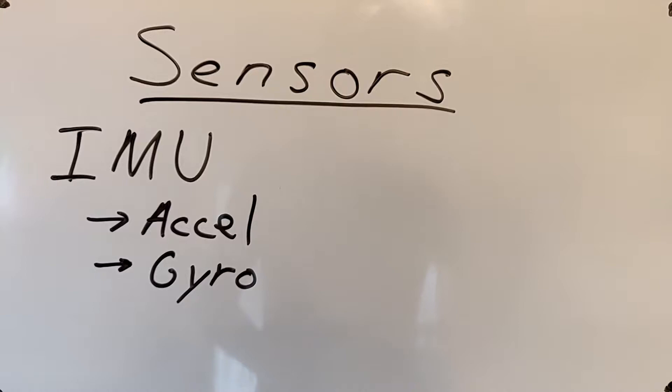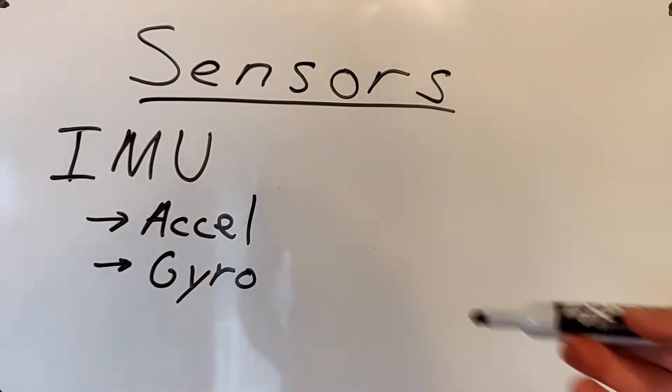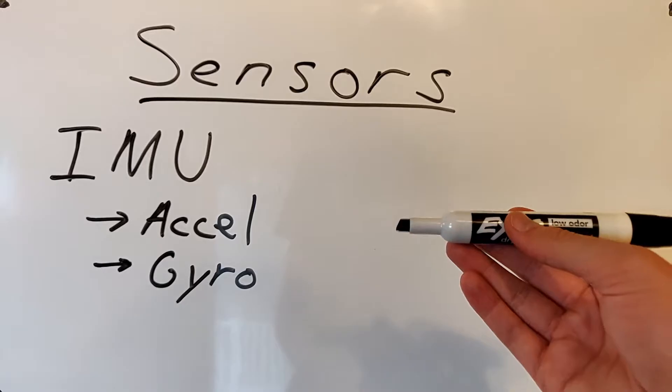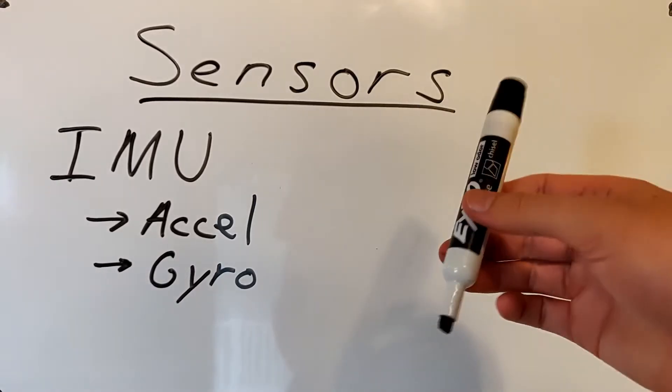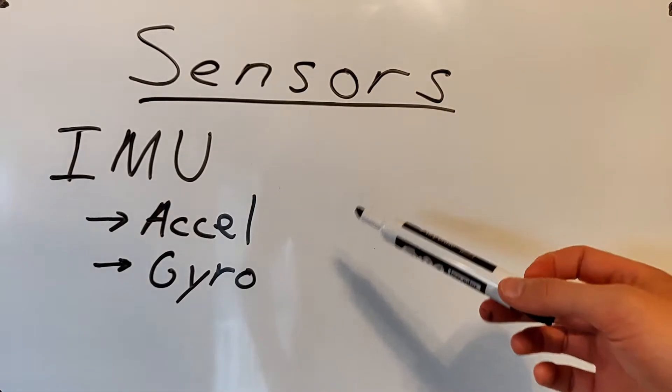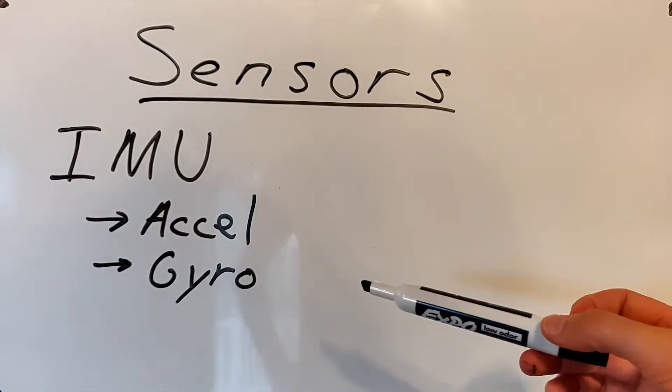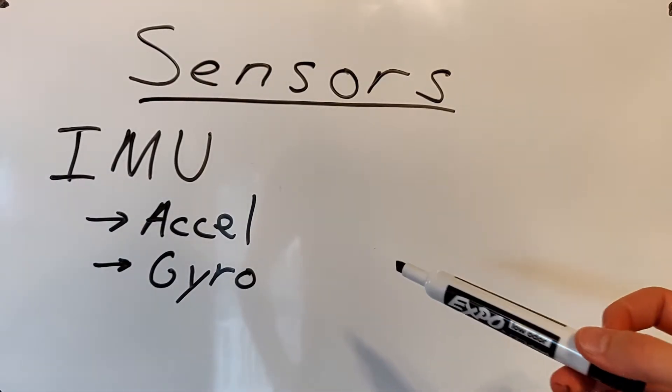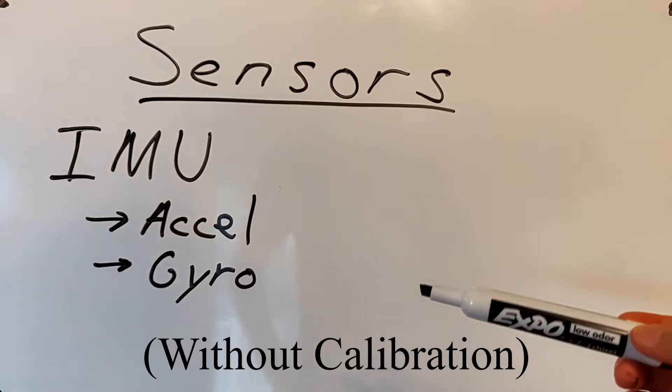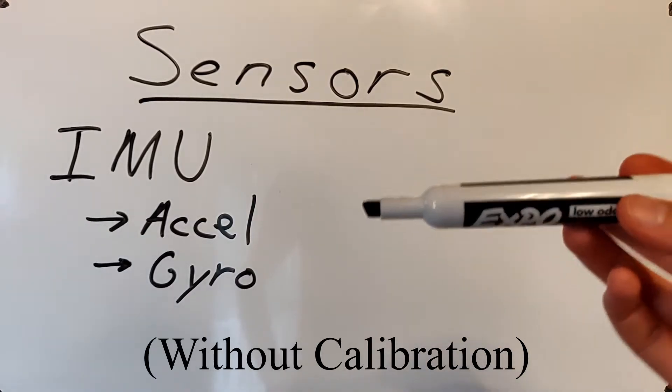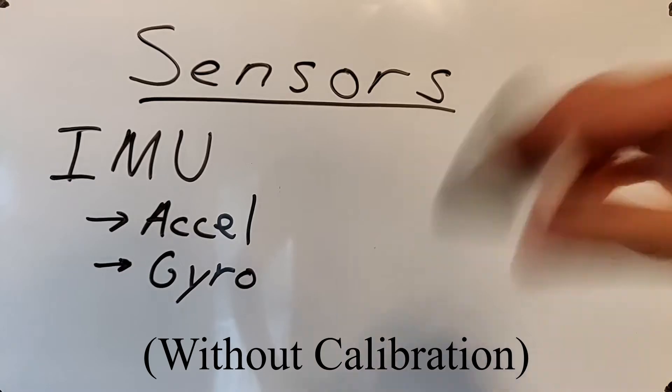The first sensor is the IMU or inertial measurement unit. This actually has two different sensors. One is the accelerometer which measures the force exerted on the quad, the linear force. The next is the gyroscope which measures the rotational motion of the quad. These two sensors only measure the linear and rotational forces on the quad. In other words it doesn't currently know where it's at and it also doesn't know where it's currently rotated. It doesn't know if it's straight up and down or upside down with those sensors.